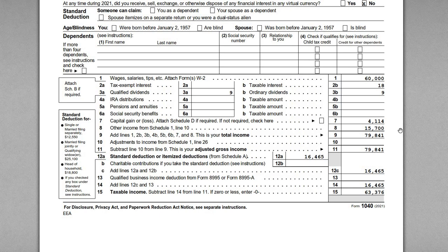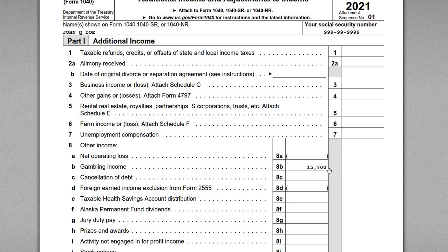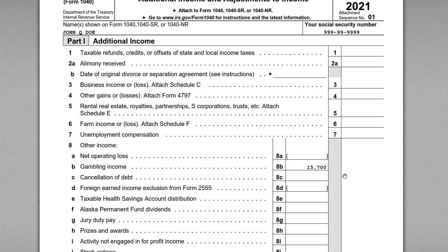Just to be clear: on Schedule 1, gambling winnings do not just include items reported on a W-2G or 1099. If you have other gambling winnings not reported on those forms, you still have to report the total here. You report the total gambling winnings, then report total losses on Schedule A to the extent they match gambling income. If you have more losses than income those are lost; if losses are lower than income you will owe tax on your net gambling earnings.